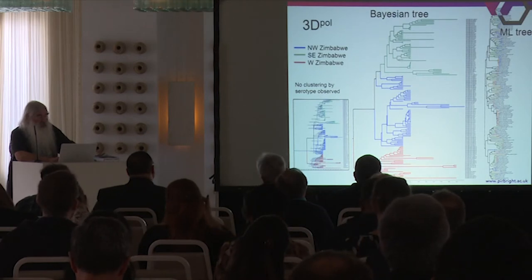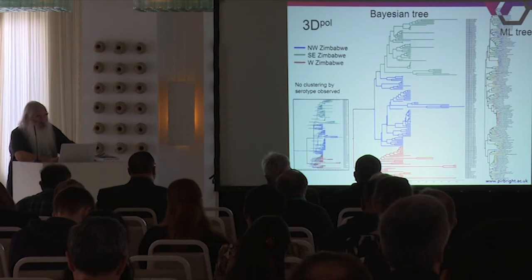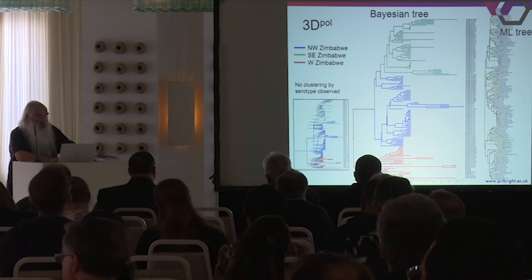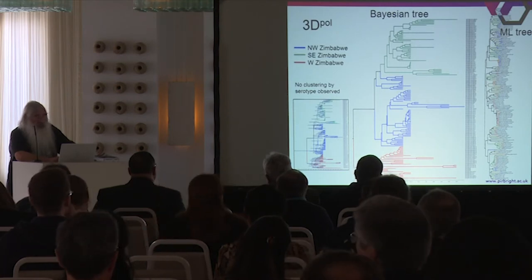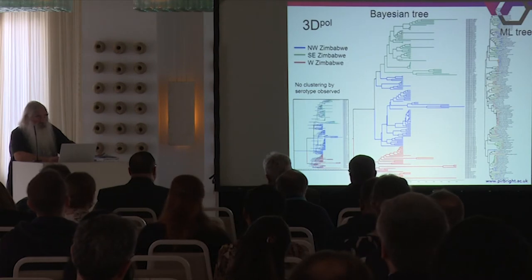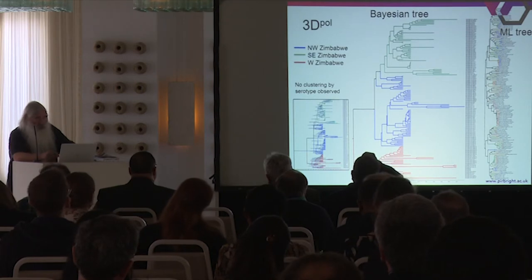There is some indication that the southeast viruses fall among the northwest ones, but given the rather large time-error rates on the Bayesian tree, those trees need rerunning. We don't see this pattern in the maximum likelihood tree, so more work is needed to get this correct.